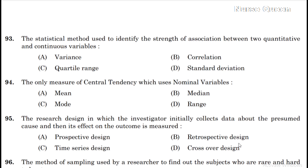The statistical method used to identify the strength of association between two quantitative and continuous variables. The options are: variance, correlation, quartile range, or standard deviation.